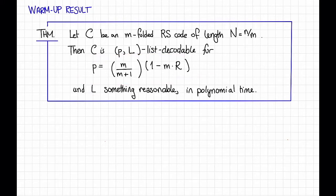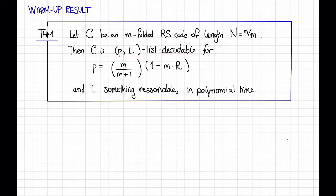This result is not actually very interesting. We wanted P equal to 1 minus R, or close to it, and you can check that no matter how you choose M, this is not going to do that. However, the proof of this theorem illustrates a few of the main ideas that we'll need to prove the full-blown theorem, so we're going to start with this.